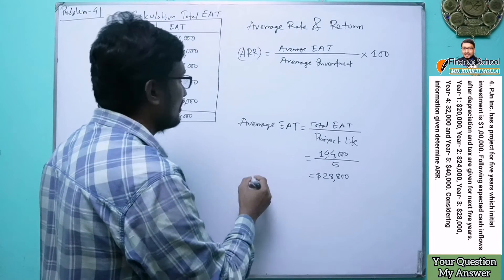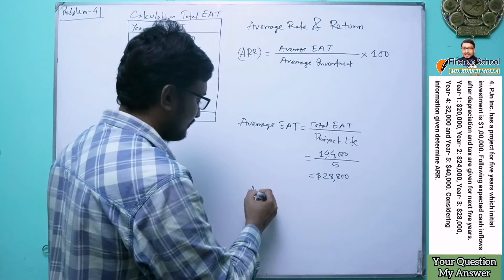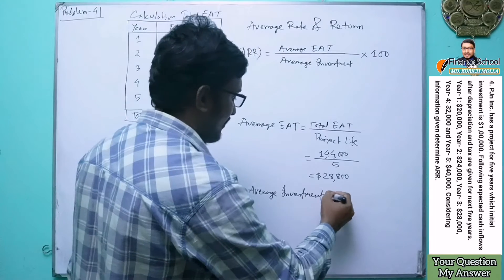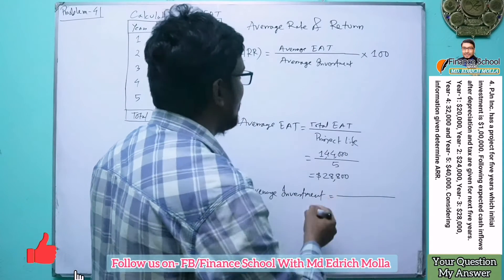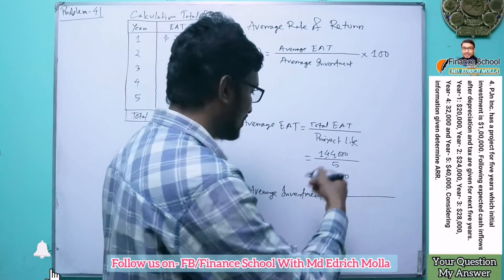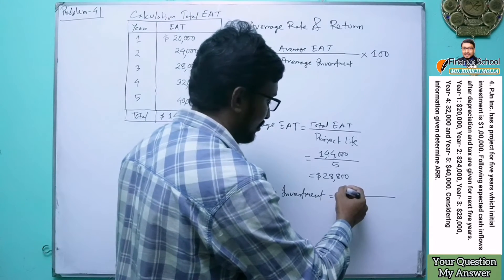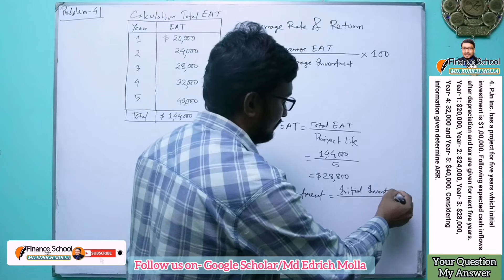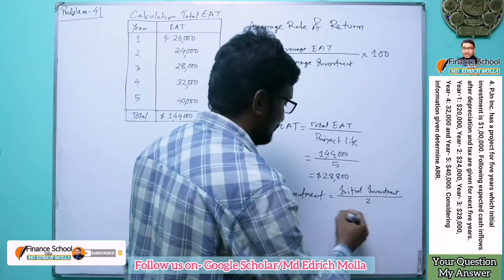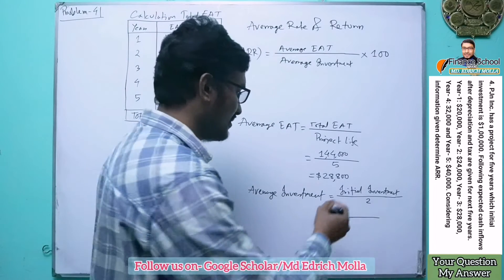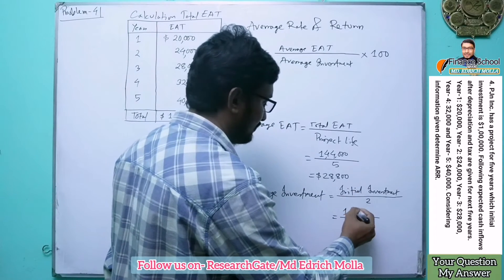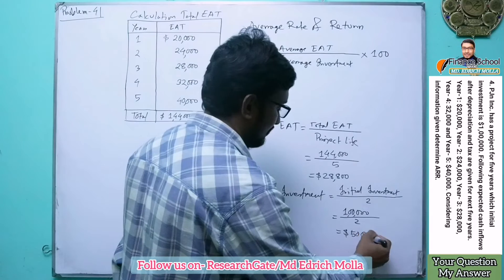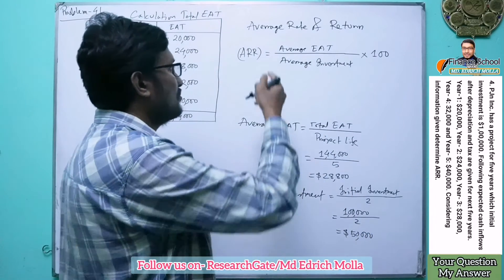Average Investment is the initial investment divided by two. The initial investment given in the question is one lakh dollars, so dividing by two gives us an Average Investment of $50,000.